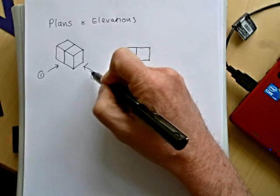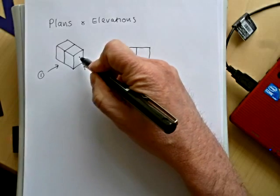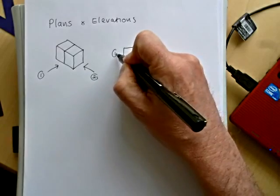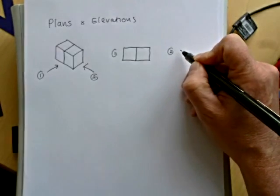Now, if we're looking from point two, we're just looking at a different side, or a different elevation. And this is just of one square. So, two will look like this.